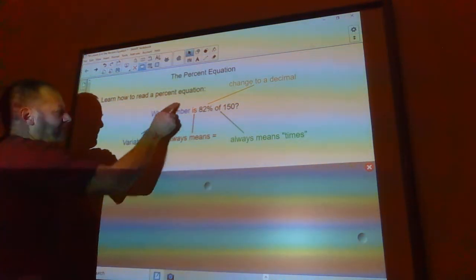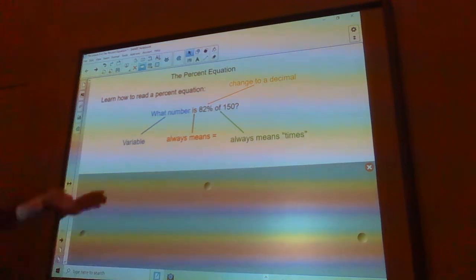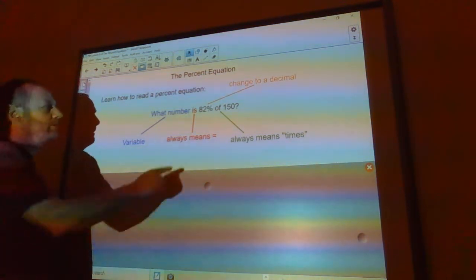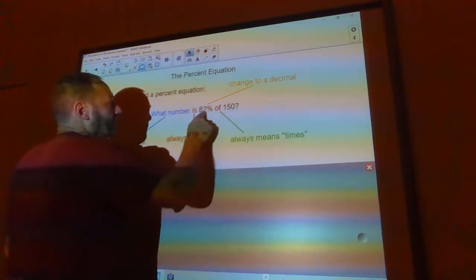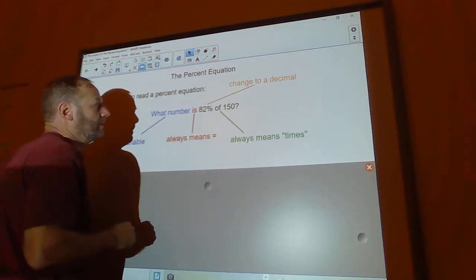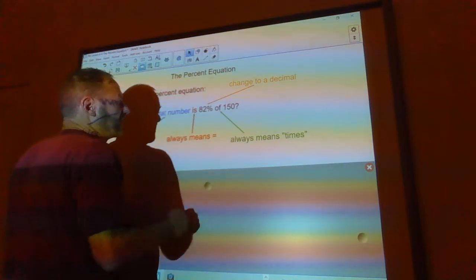So, the what number - anytime you see what number or what percent, that's your variable. Anytime you see the word 'is', that means equals. You can take any percent, change it to a decimal. And the word 'of' always means times.